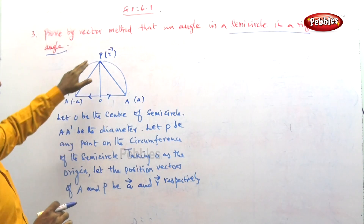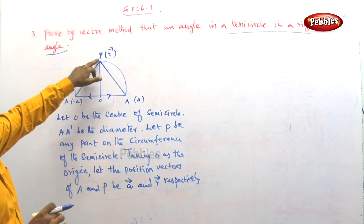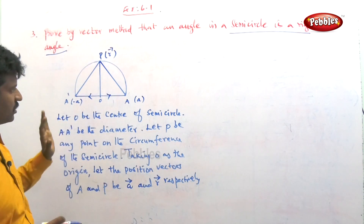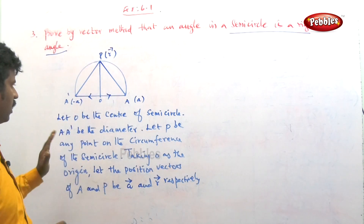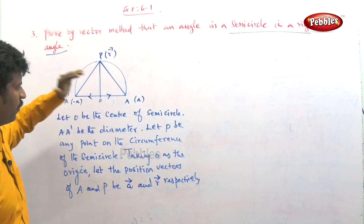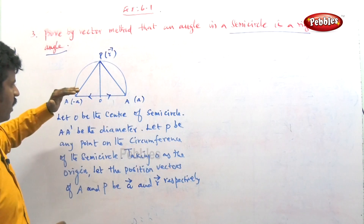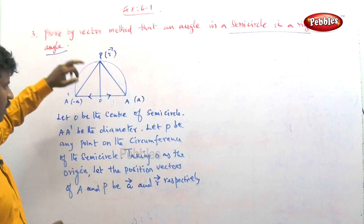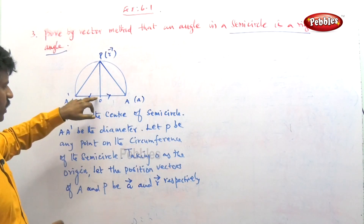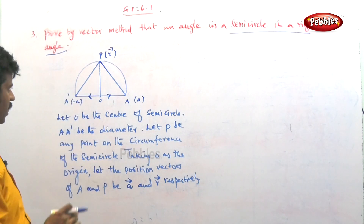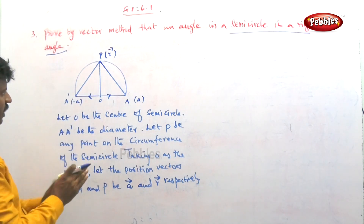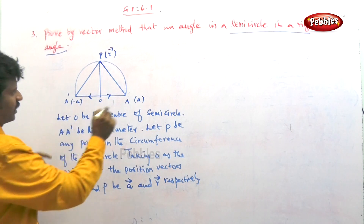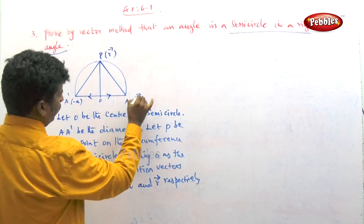Here, A and A' are the endpoints of a diameter, and B (or P) is any point on the circumference of the semicircle. Let the center be the origin. We define position vectors: the position vector of A is vector a, and the position vector of P is vector r.